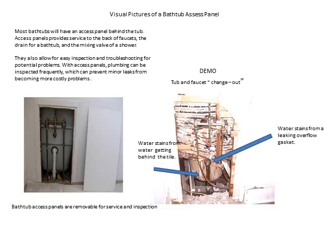Most bathtubs will have an access panel behind the tub. Access panels provide service to the back of faucets, the drain for a tub, and the mixing valve over the shower. They also allow for easy inspection and troubleshooting for potential problems. With access panels, plumbing can be inspected frequently, which can prevent minor leaks from becoming more costly repairs. The demo shows water stains from a leaking overflow gasket and water stains from water getting behind the tile.